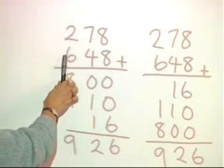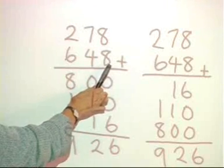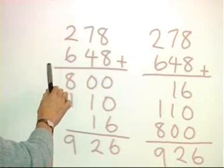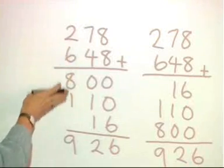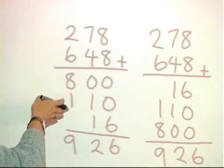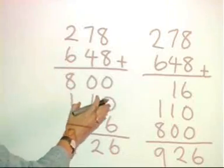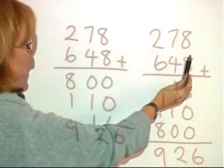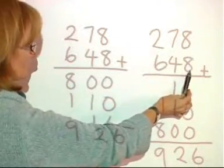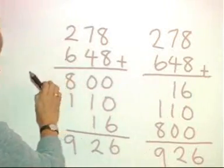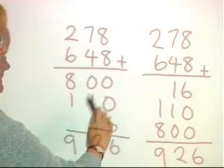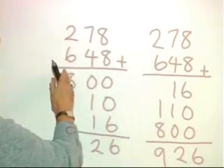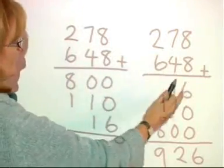So it doesn't actually matter whether you start with the hundreds or the units. Because children have been used to calculating mentally to start with, they'll be more happy with starting with the bigger numbers. For the very compact method, they need to start with the smallest numbers involved. So you'll need to move them across gently, initially showing them that it doesn't make any difference whether you start with the hundreds or the units.